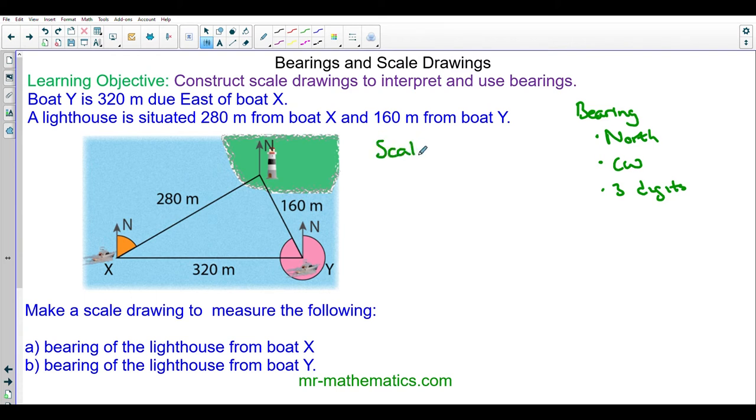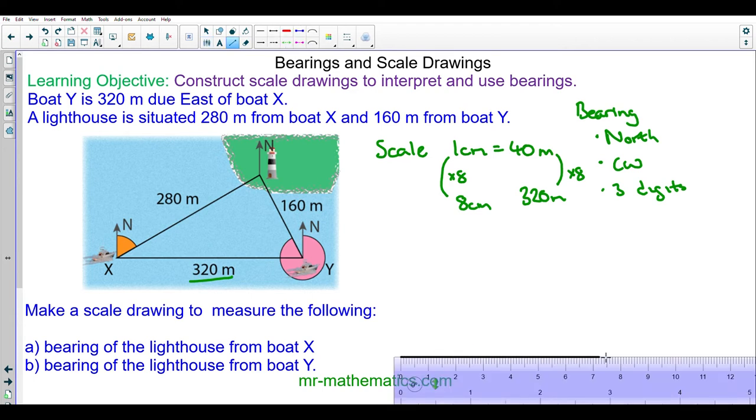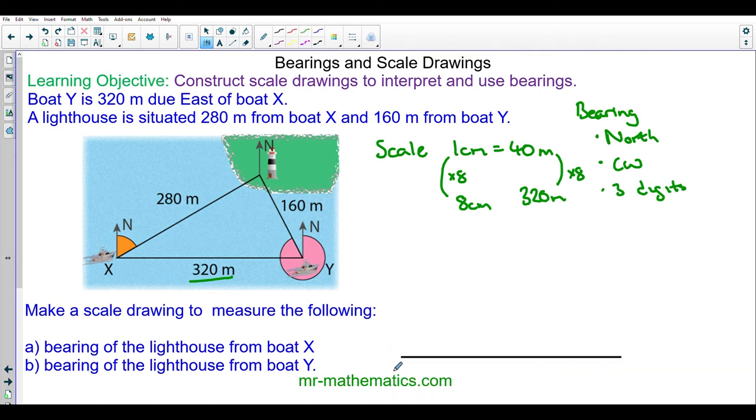The scale I'm going to choose is 1 centimeter represents 40 meters. To begin with I'm going to convert 320 meters which will be 40 times 8 to make 320, and 1 times 8 so I need an 8 centimeter line and this will be the horizontal distance between X and Y. Using the ruler I'm going to draw an 8 centimeter line and label this X to Y.